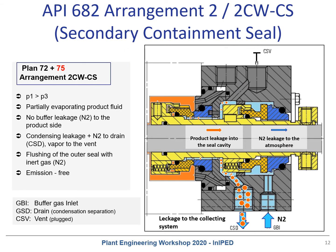Another seal configuration is also a dual unpressurized seal. The inner seal is the same as in the previous example, but the outer seal is now a dry running containment seal. The cavity between these two seals is filled with process vapor, which is the leakage of the inner seal. Containment seals are non-contacting gas seals running on process vapor, or with a piping plan 72 inert buffer gas purge. Process leakage which does not fully vaporize is collected in the piping plan 75.